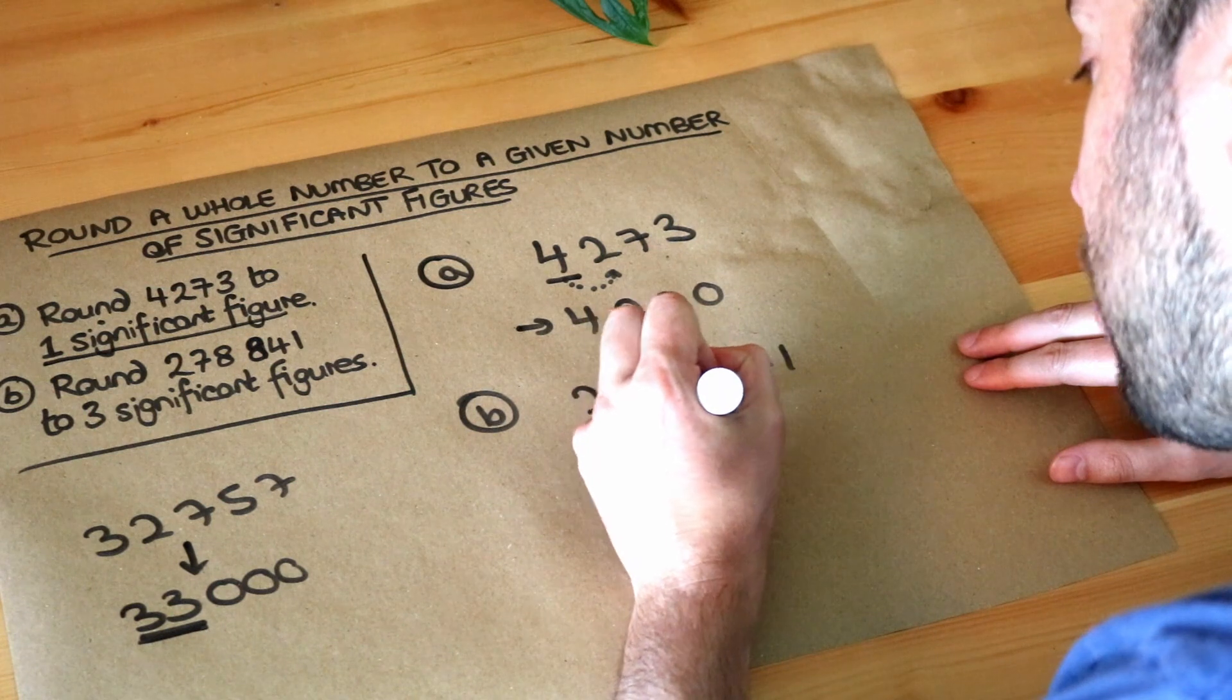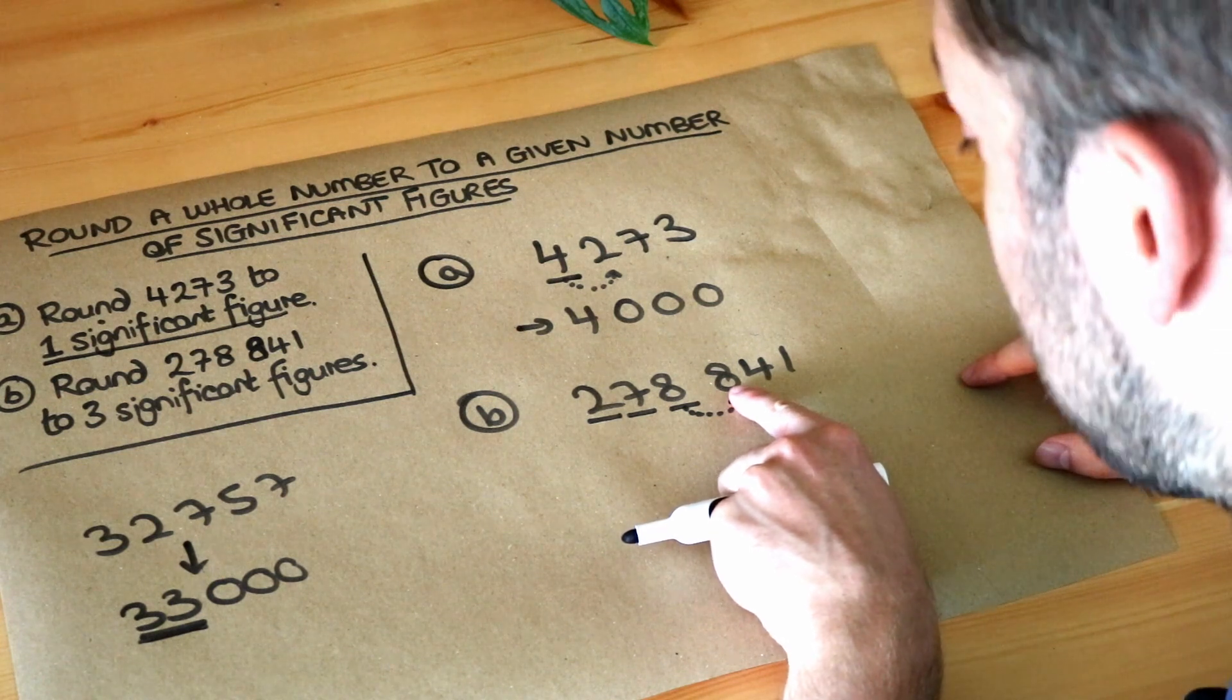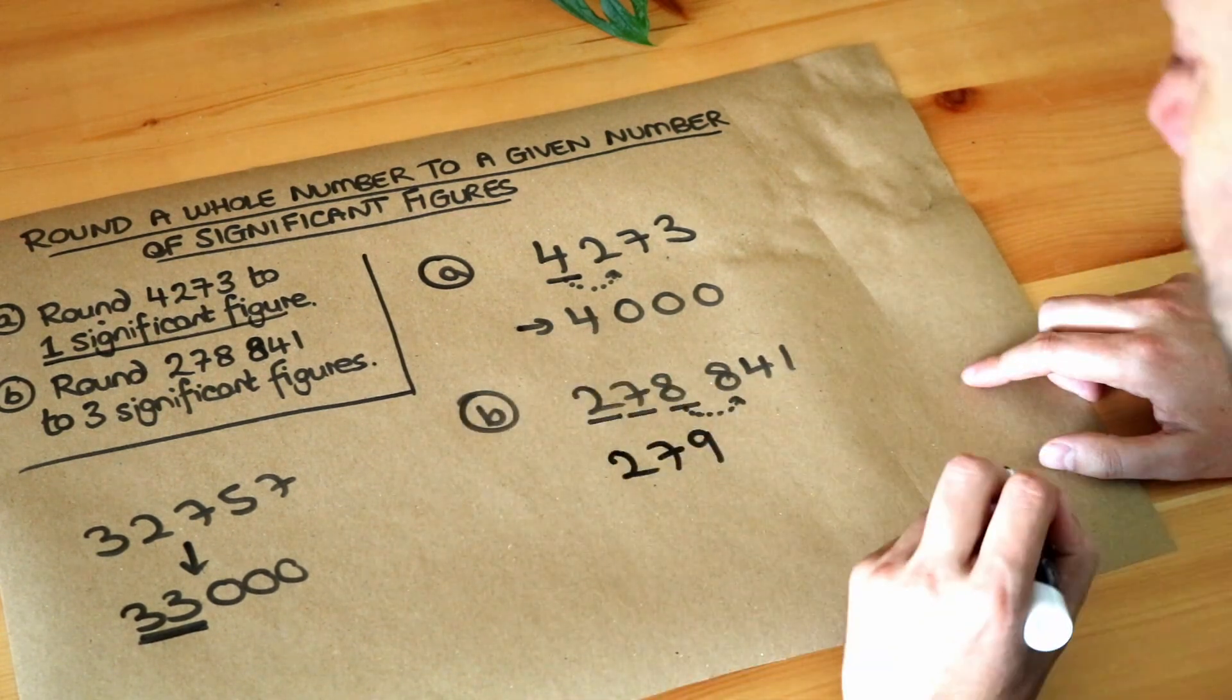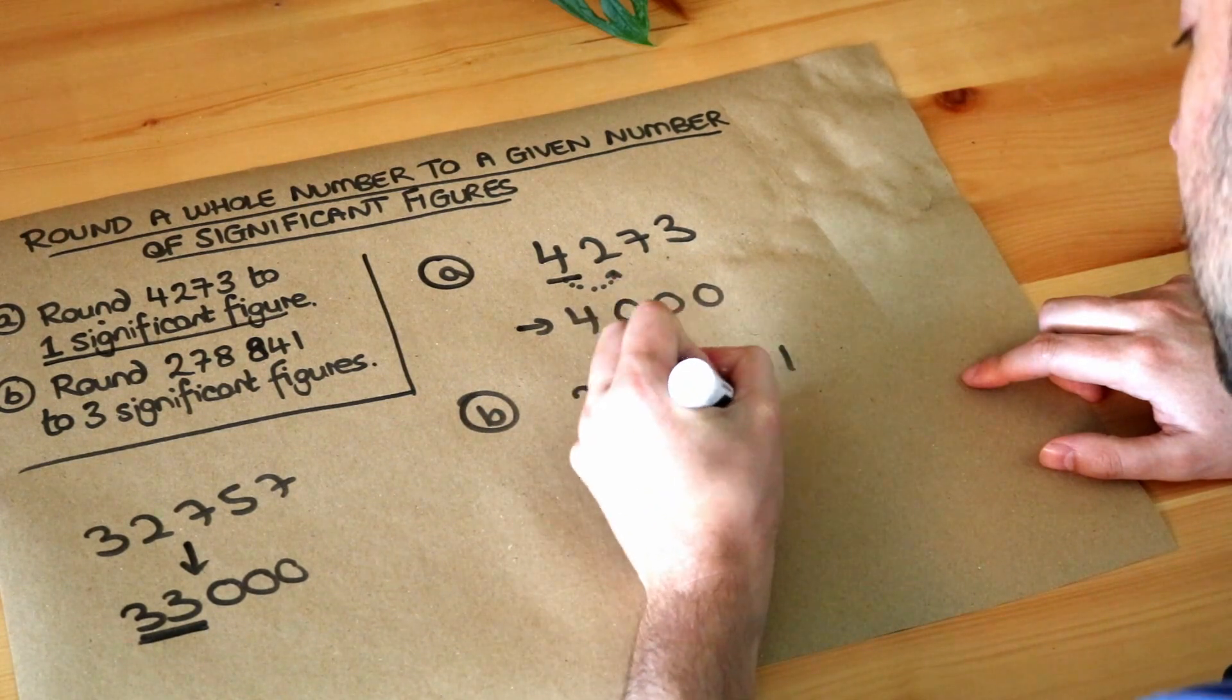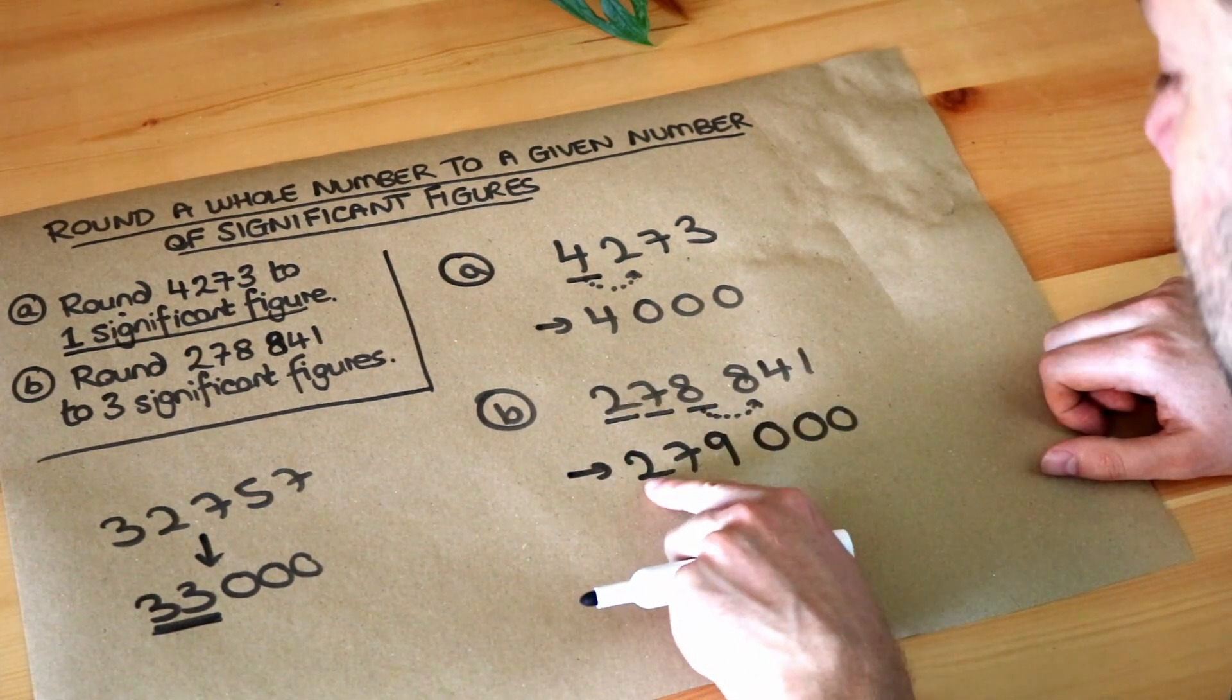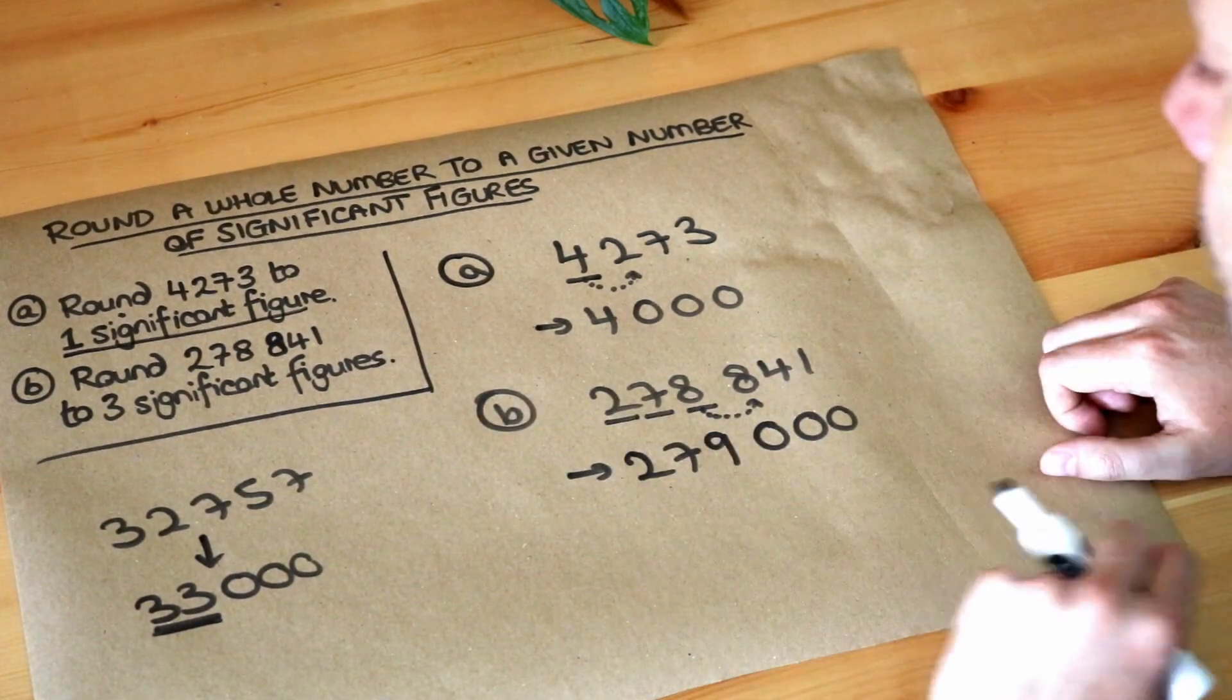So again we check the digit after the last digit we want to keep. Is that five or above? It is in this case so that eight is going to round up to nine and we still got the two and the seven on the front. And as before because we want to keep this as the thousandth digit we're going to have to put zeros for the remaining numbers. So this number has rounded to 279,000 and we can see it's three significant figures we've kept three non-zero digits at the start of the number.